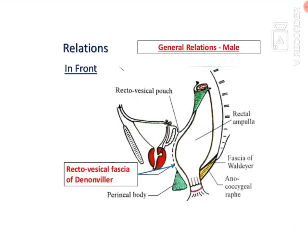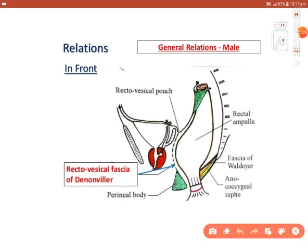Regarding peritoneal relations: the upper one-third of the rectum is covered by peritoneum on its anterior and lateral surfaces. In the middle one-third, peritoneum covers only the anterior aspect. The lower one-third is non-peritoneal in both males and females.